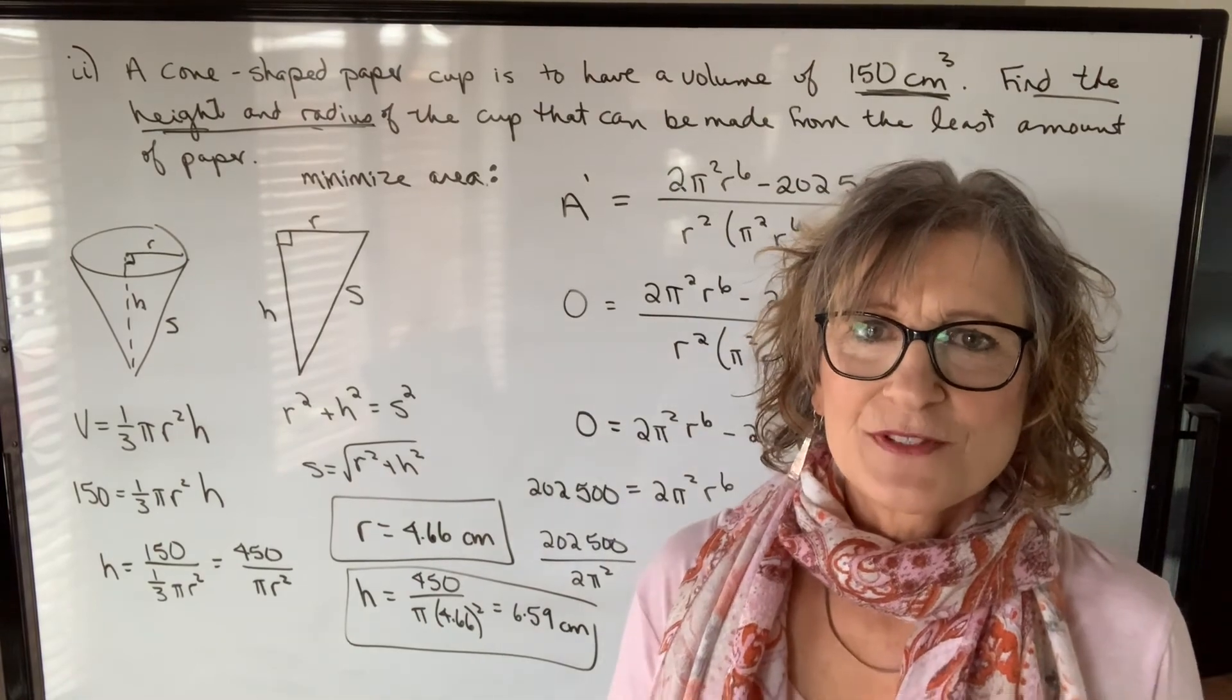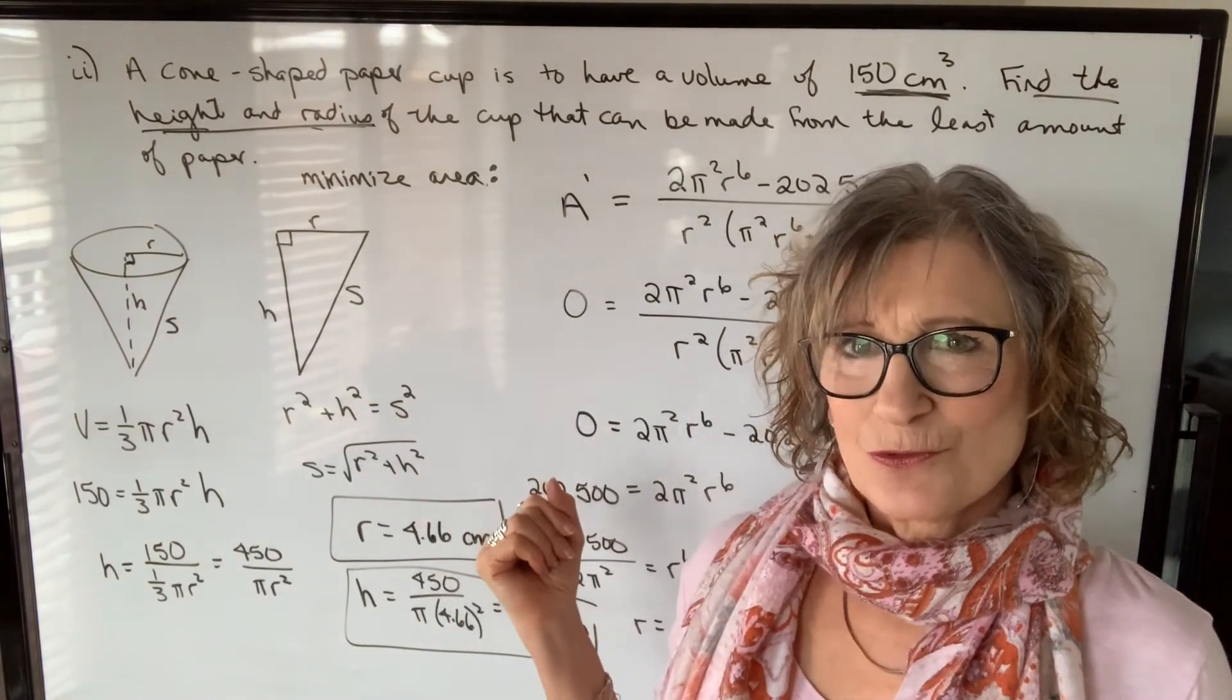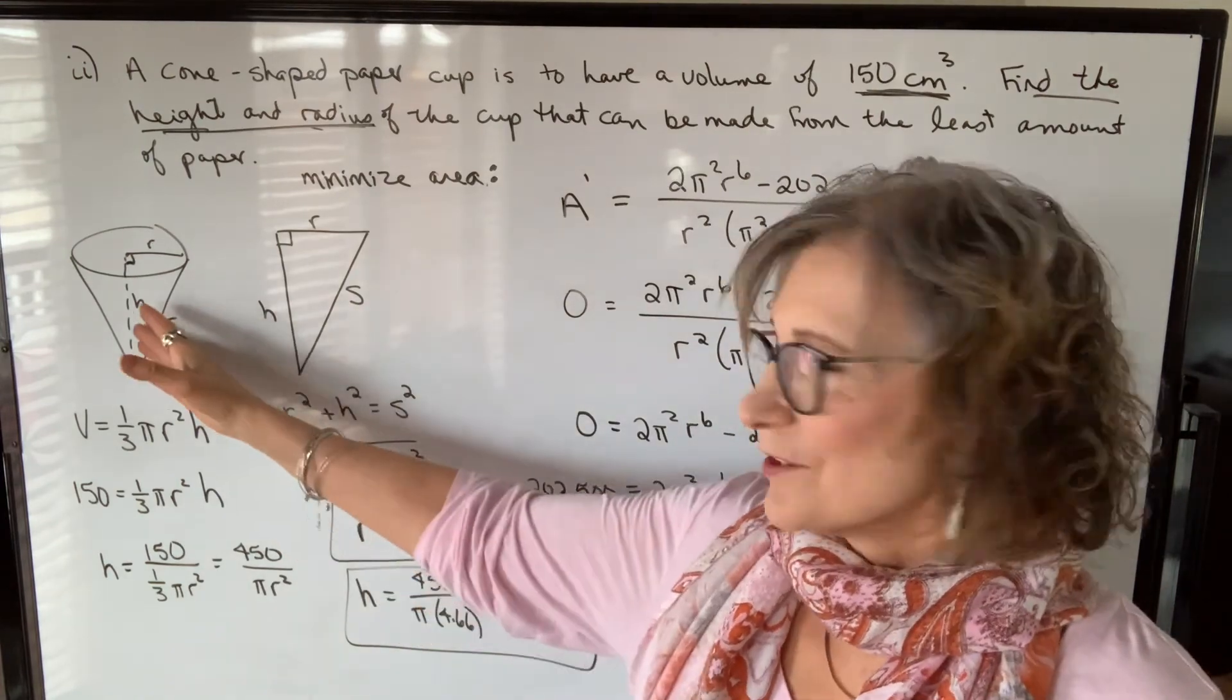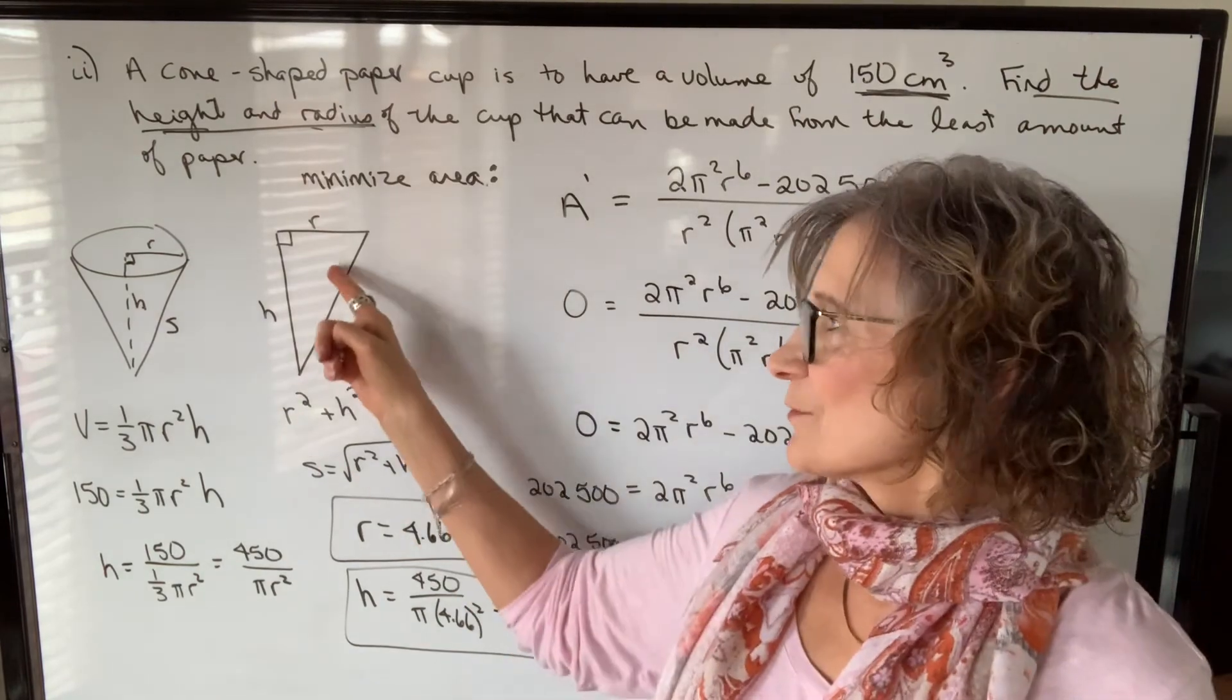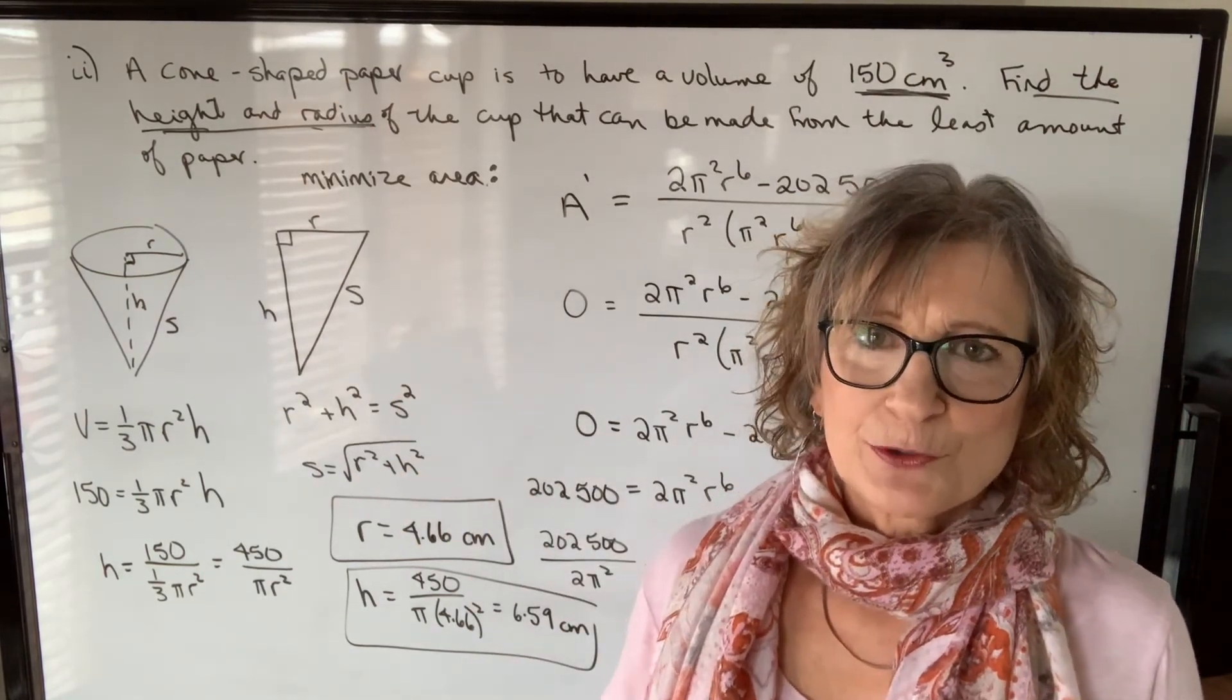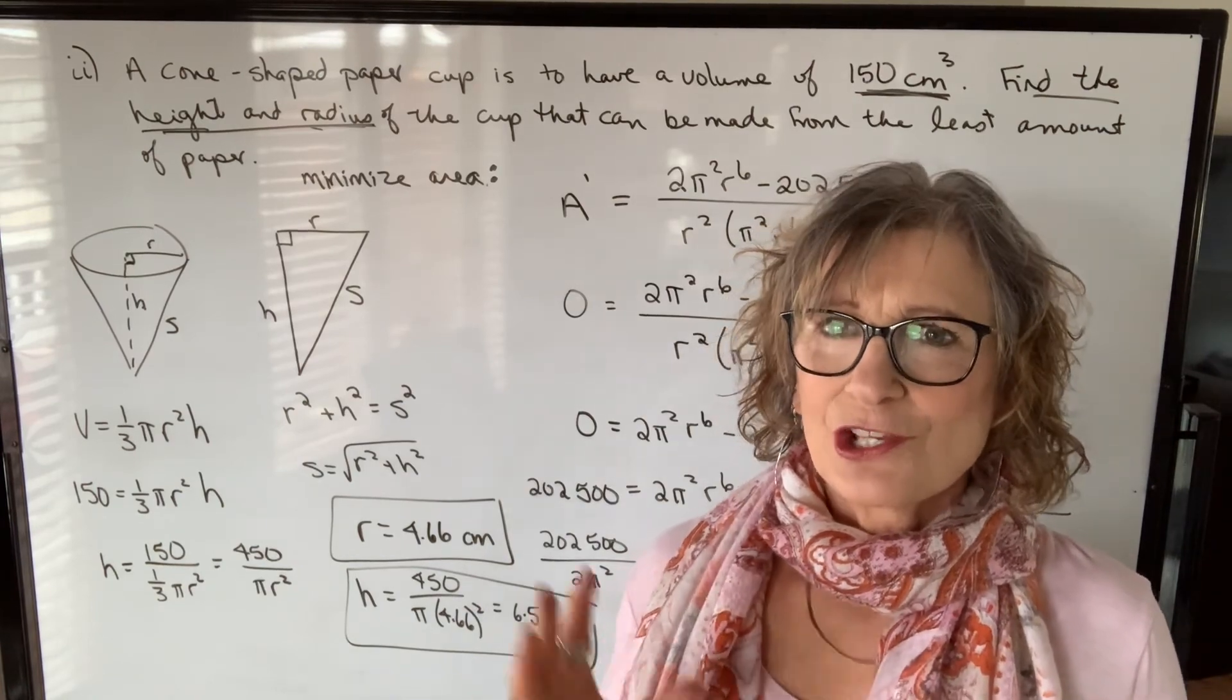I've said it a few different times during these videos. These are not easy. This is, you know, one of the tougher ones because you're bringing in three different mathematical relationships, area of a cone, volume of a cone, as well as your right triangle theorem to be able to express the function you want in terms of one variable. So lots going on there.